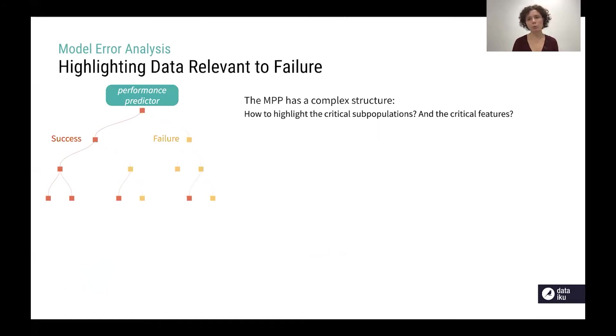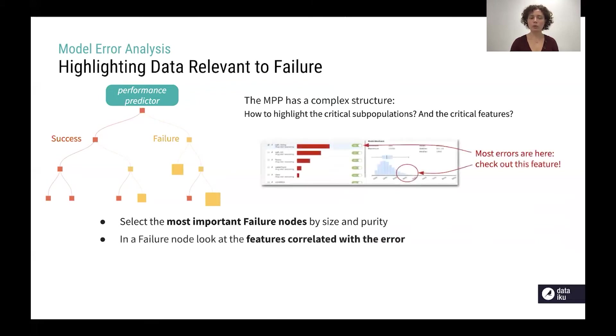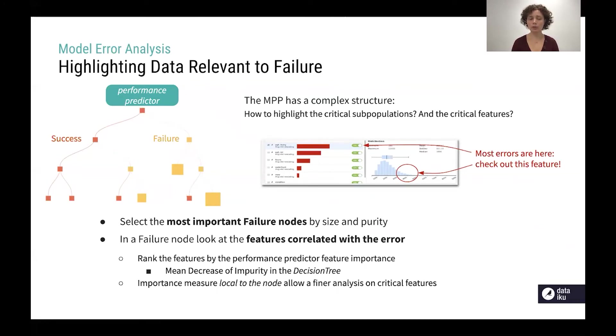The MPP can have a complex structure with many nodes and we need to highlight the data that is relevant to failure and discard all the rest. So how can we do this automatically? First we can select the most important failure nodes by size and purity and then when we have a look at one specific failure node we can look at the features correlated with the error. We can gather them for instance by ranking the features by the performance predictor feature importance which in case of a decision tree is the mean increase of impurity. We can also have a finer analysis if we take importance measures that are local to the node.